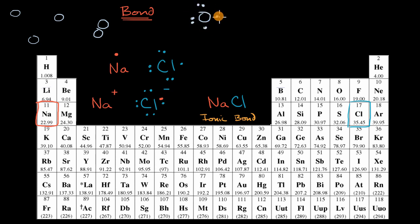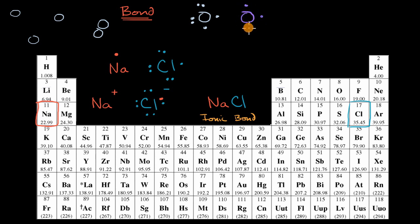You have these two valence electrons that are not paired with another electron. Now let me draw another oxygen, and I'm going to do it with a different color so we can keep track of the electrons. So another oxygen right over there also has six valence electrons.